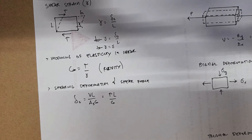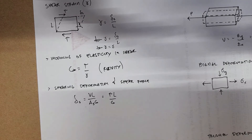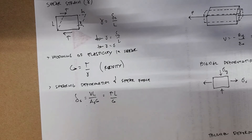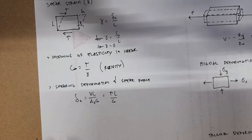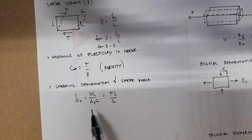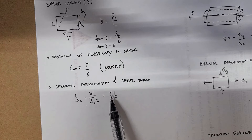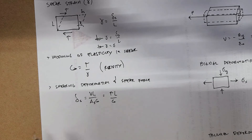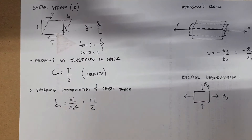The deformation caused by your axial stress is PL over AE. Similarly, the deformation in terms of shear, caused by your shear force, is VL over AS over G. Where V is your force and AS is your sheared area. And since V over AS is just tau, the shear stress, you can write it as tau times L over G. So this is deformation caused by shear force, while PL over AE is deformation caused by axial forces.